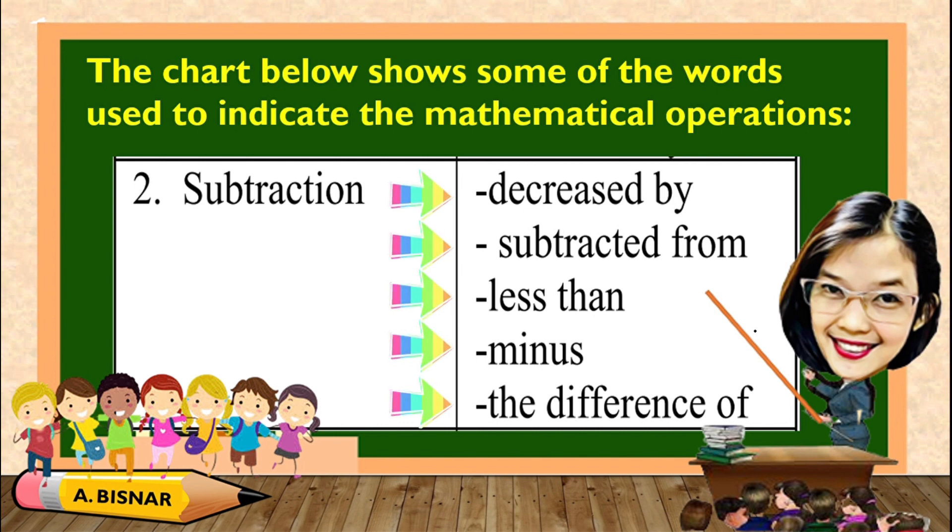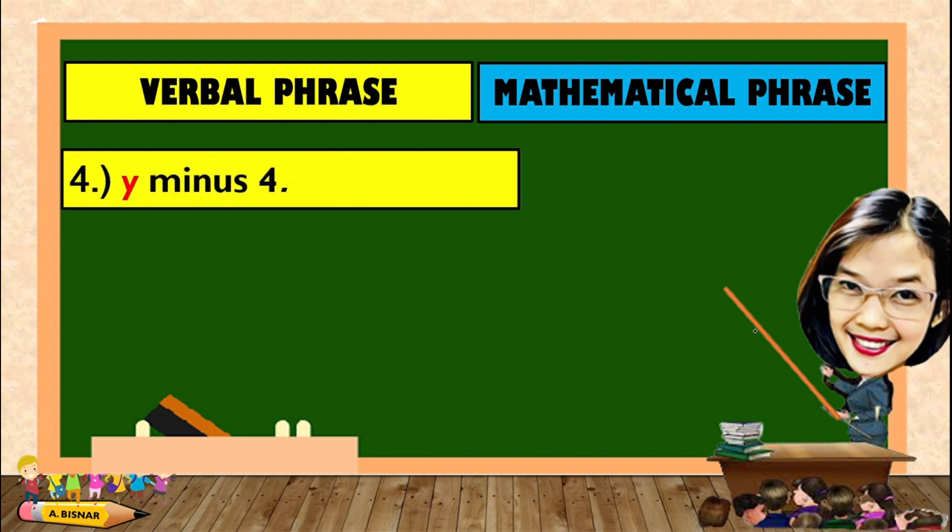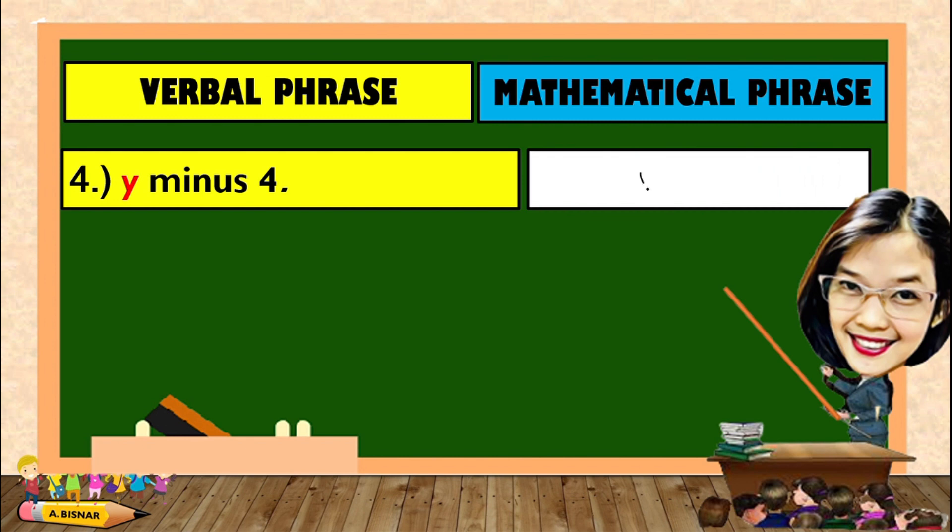Let us try to use some of this. Translate the verbal phrase into mathematical phrase. For number 4, Y minus 4 can be written as this.